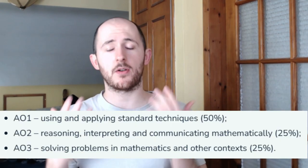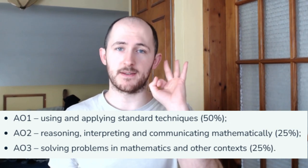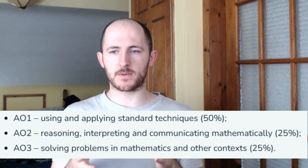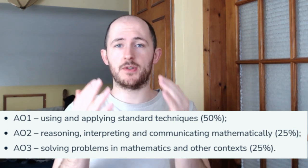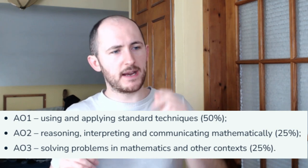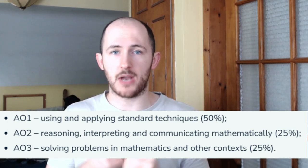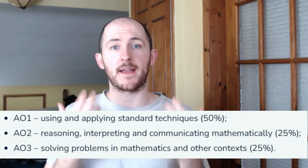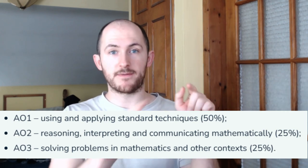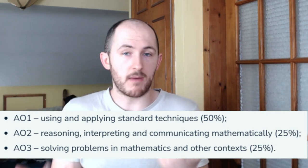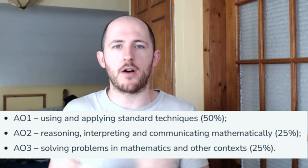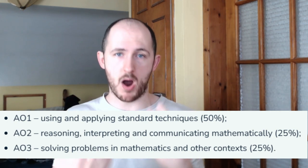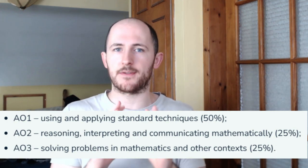What's slightly more interesting is the three assessment objectives for GCSE maths: AO1, AO2 and AO3. AO1 is basically: do you know how to do the mathematical processes? If I give you two fractions, do you know how to add them? If I give you a percentage, do you know how to take a percentage of a number? These kinds of questions — simplify this algebra, take a half of 52 — make up 50% of the marks.